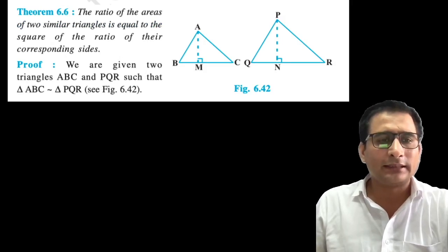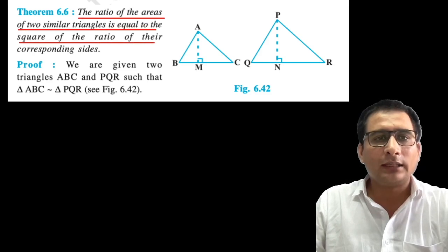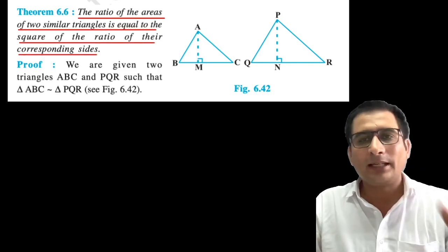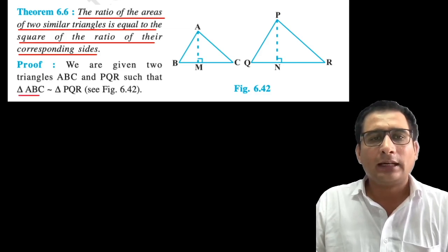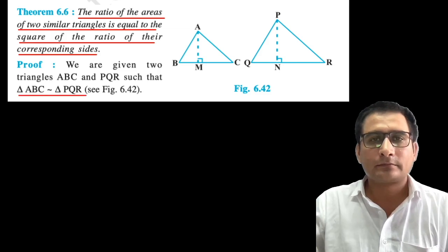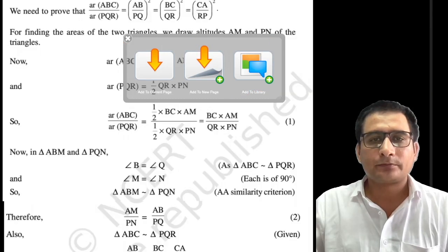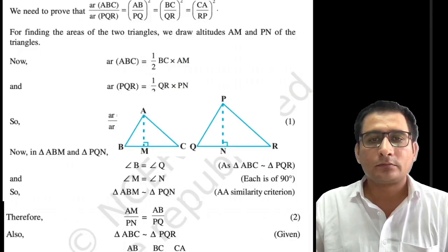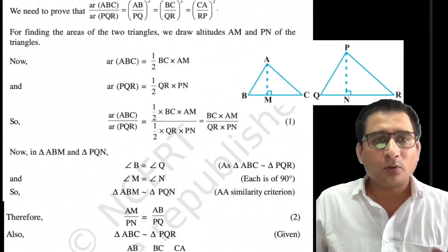This is Theorem 6.6. Theorem kehti hai: the ratio of the areas of two similar triangles is equal to the square of the ratio of their corresponding sides — ratio of the corresponding sides. Iska proof dekhte hain. Agar triangle ABC, triangle PQR ke similar hai. So let us look at the proof of this theorem. So these are the triangles here. Ab iska proof dekhte hain.